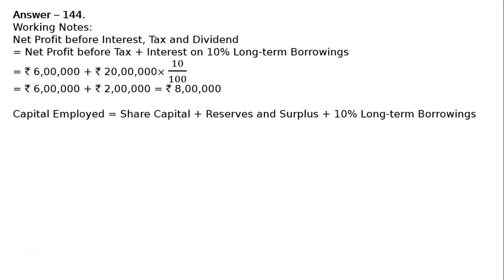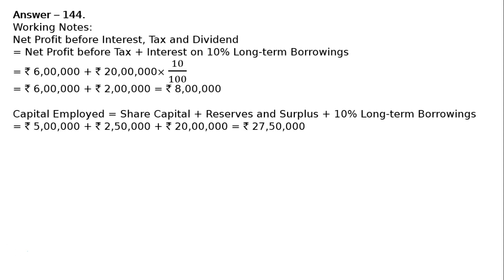Next, capital employed is equal to share capital plus reserves and surplus plus 10% long-term borrowings. That is equal to Rs. 5 lakhs plus Rs. 2 lakhs 50,000 plus Rs. 20 lakhs, which equals Rs. 27 lakhs 50,000.